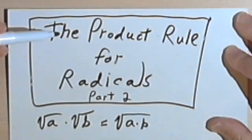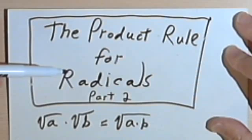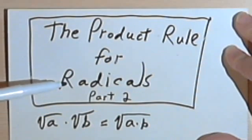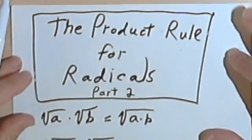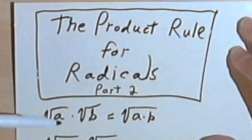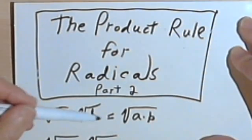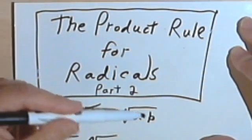This is going to be the second video about the product rule for radicals. In this one I want to deal with how the product rule works when you have a variable under the radical sign. Remember, the product rule says that the square root of a times the square root of b equals the square root of a times b.